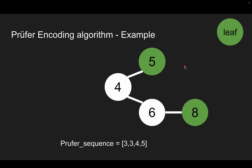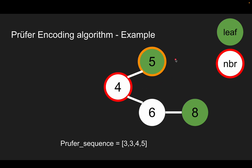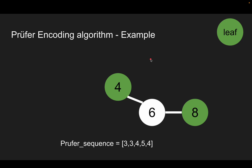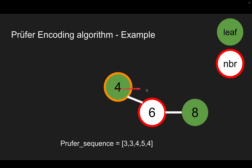In the fifth iteration, we find the leaf node with the smallest label, which is 5. In the sixth iteration, we remove the leaf node with the smallest label, find its neighbor, add its neighbor to the Prüfer sequence, and remove the leaf node.